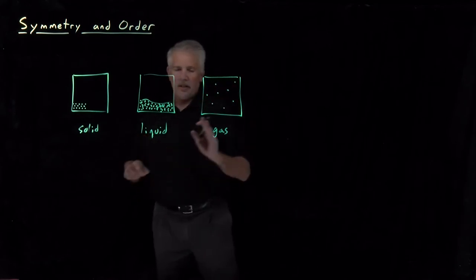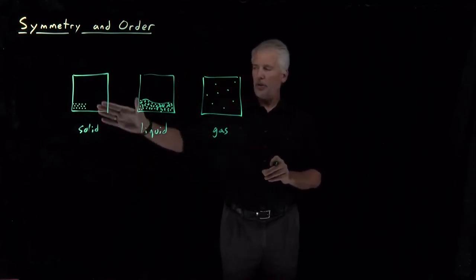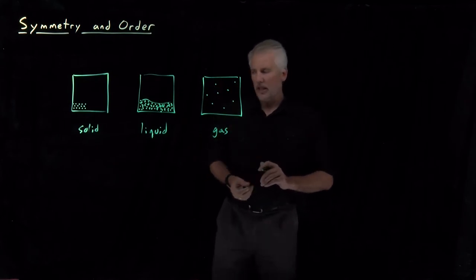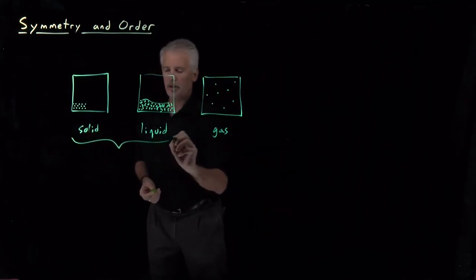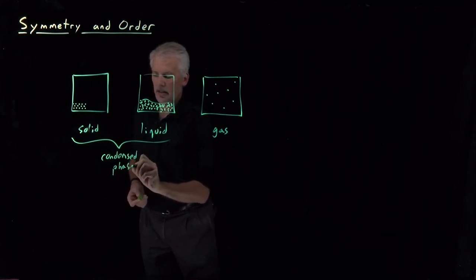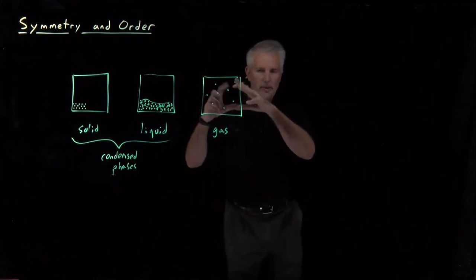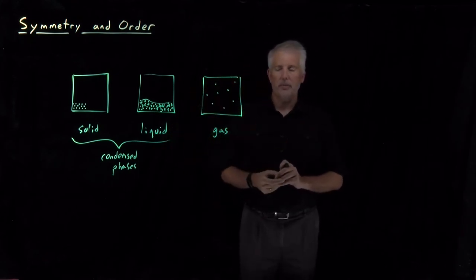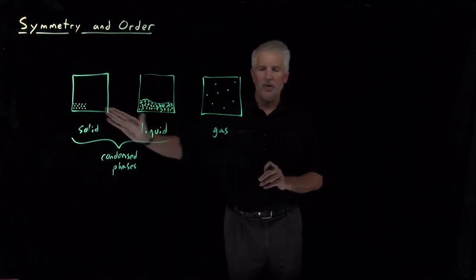The difference between solid and liquid, which settle to the bottom of that container, and the gas, which expands to fill the whole container. We call solids and liquids condensed phases because the gas, which spreads out through the container, if I condense it down so that every molecule is next to a bunch of other molecules, then I have either a liquid or a solid.